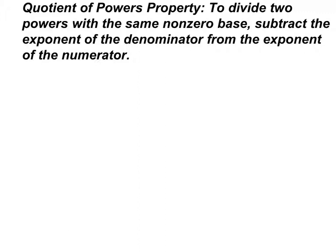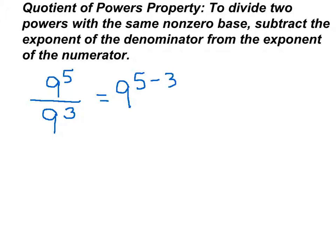So if you have 9 to the fifth power over 9 to the third power, you could rewrite this as 9 to the fifth power minus the third power, or 9 to the second power.